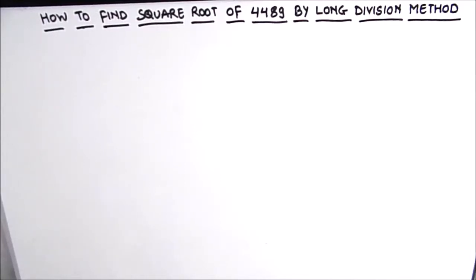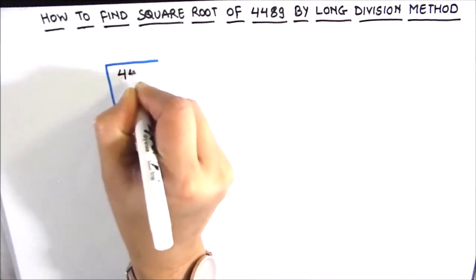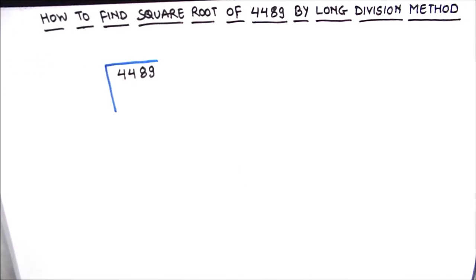Hello everyone, in this video we are going to learn how to find the square root of 4489 by long division method. Without wasting any time, let's start. The number here is 4489. The first step in finding the square root by long division method is to group the numbers in pairs starting from the units place.